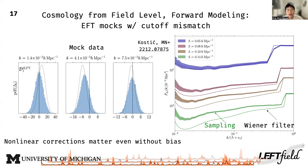Here are the results. On the left I'm showing histograms of the residuals between the inferred and true Fourier modes of the initial conditions for three Fourier bins. Residuals being zero implies unbiased inference. The Gaussian dotted lines indicate the Wiener filter solutions, corresponding to standard linear reconstruction of the initial conditions. Even for these fairly large scales, the posteriors are not Gaussian and are generally less biased than the Wiener filter solution.